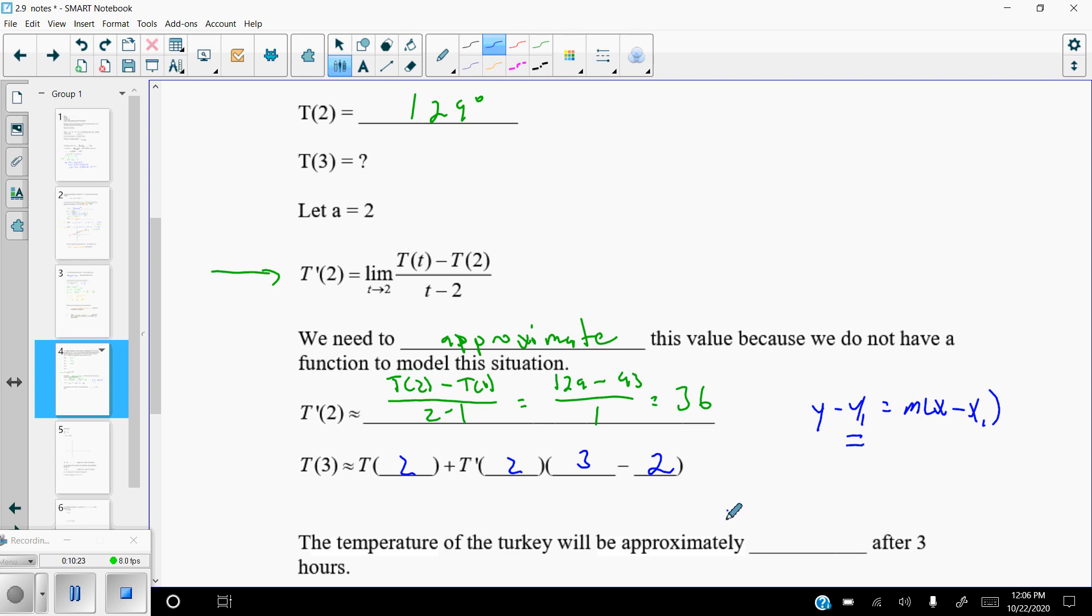So now let's actually fill in the numbers here, so we can actually get a value. So t of 3 is going to be approximately equal to, well, let's see, t of 2 was 129. The slope that we found out was approximately 36. And then 3 minus 2, of course, is 1. So really, what we get is 129 plus 36, which is 165. Yeah, 165 degrees. So the temperature of the turkey is going to be approximately 165 degrees after three hours.